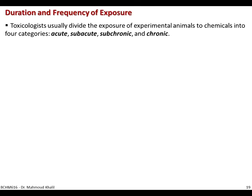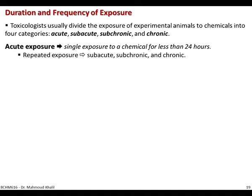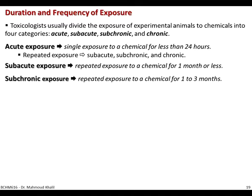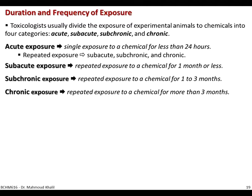Toxicologists divide exposure of experimental animals to chemicals into four categories: acute, sub-acute, sub-chronic, or chronic. Acute exposure means a single one-time exposure to a chemical for a period less than 24 hours. Sub-acute exposure is repeated exposure for one month or less. Sub-chronic is repeated exposure for one to three months. Chronic exposure is repeated exposure to a chemical for more than three months.